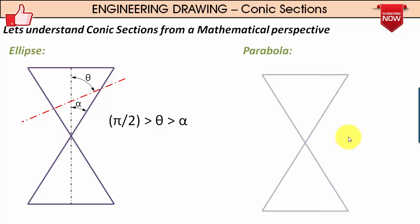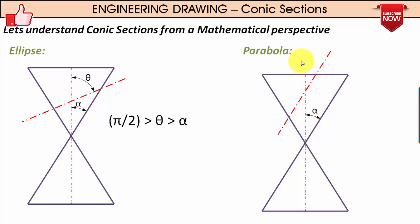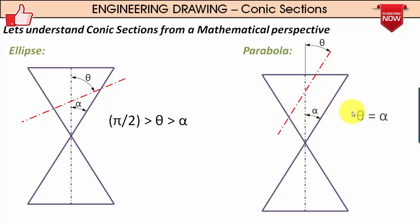For the parabola, looking at the front view, alpha is the semi-vertical angle and theta is the angle made by the cutting plane with the vertical axis. Since the cutting plane is parallel to one generator, these two angles are corresponding angles, which means theta equals alpha. So when theta equals alpha, the conic section you get is a parabola.